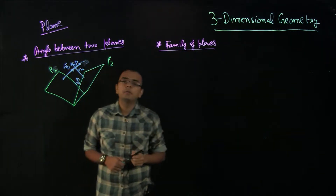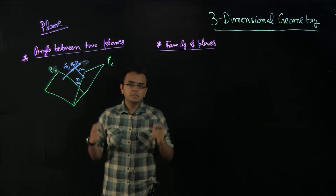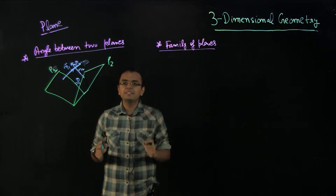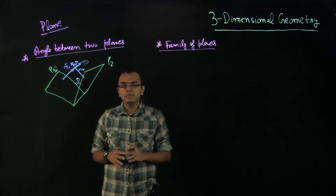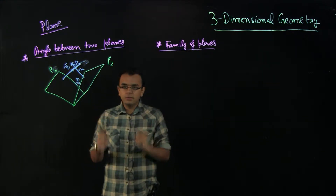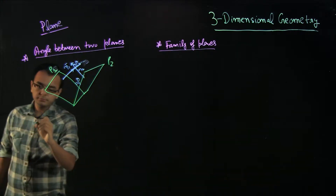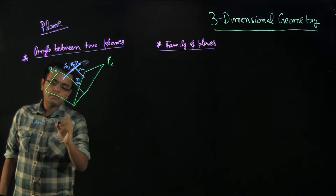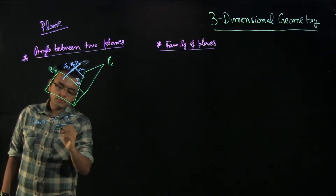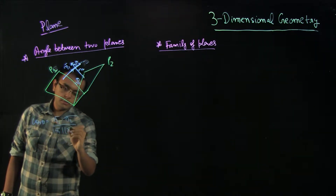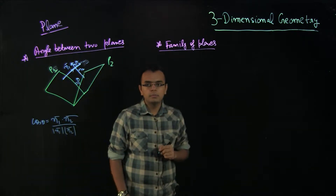How will you find the angle between two vectors if you know the planes? If you know vectors, dot product should come to mind — whenever you think of angle, think dot product. So cos theta is N1 dot N2 divided by mod of N1 times mod of N2. This should be very quick for you to remember.